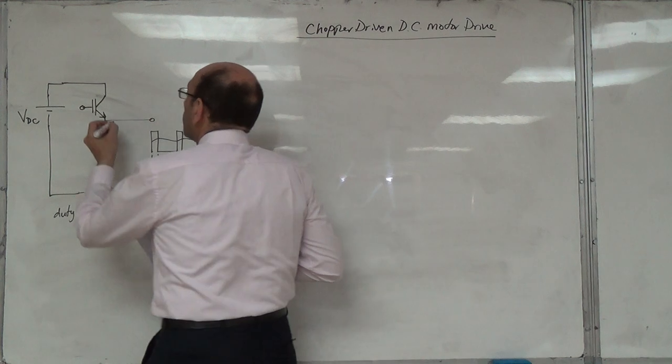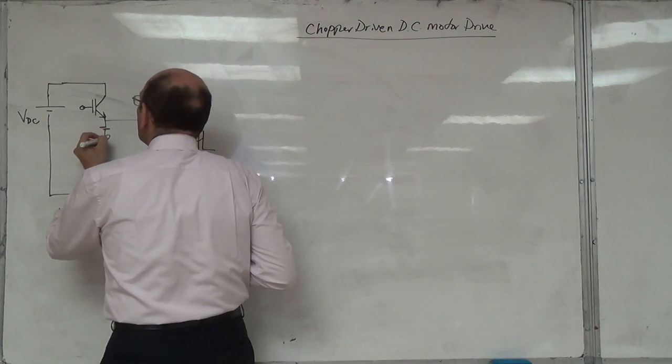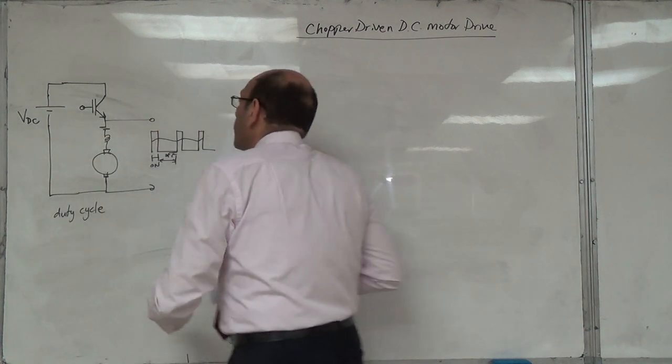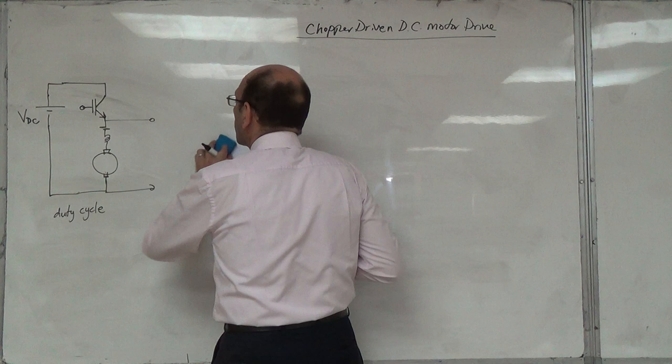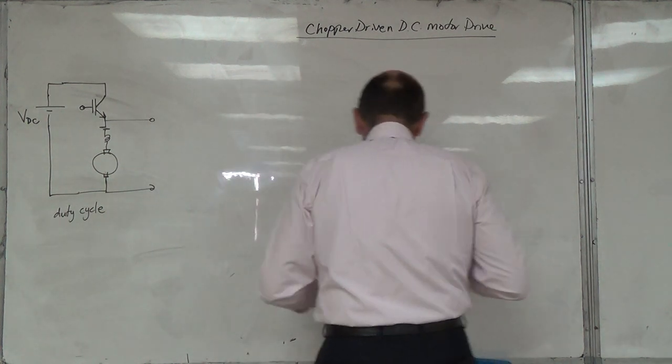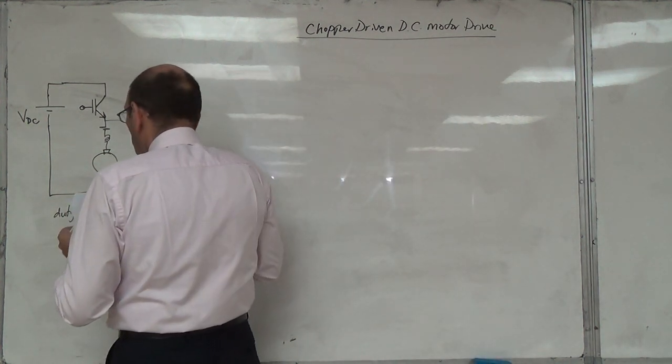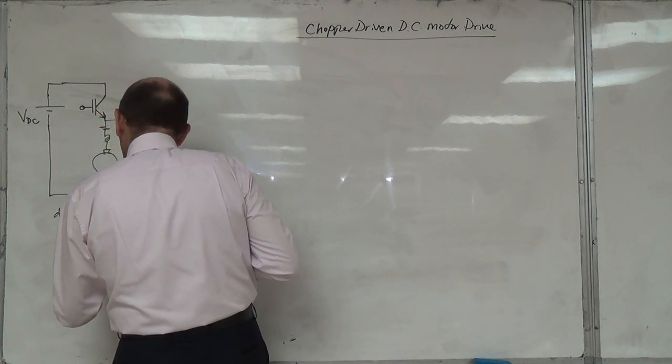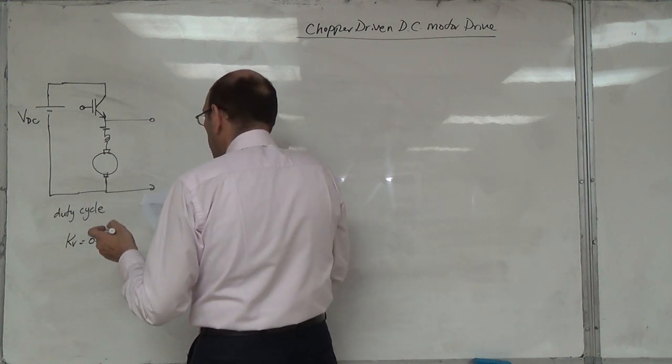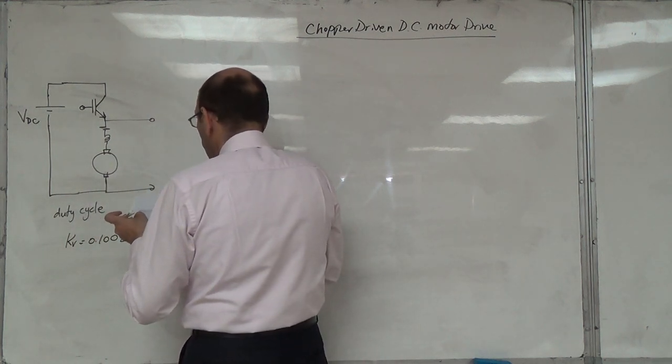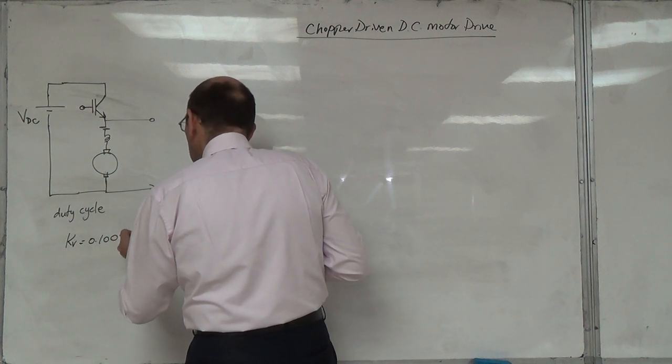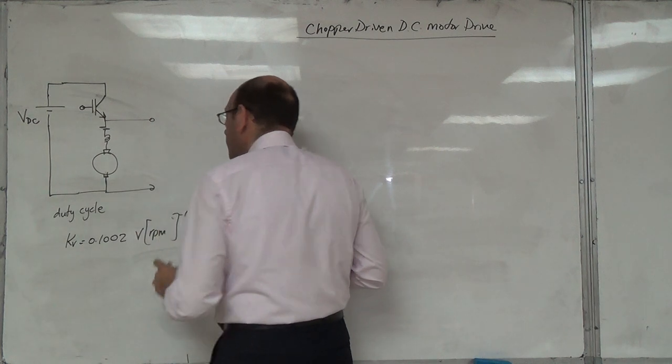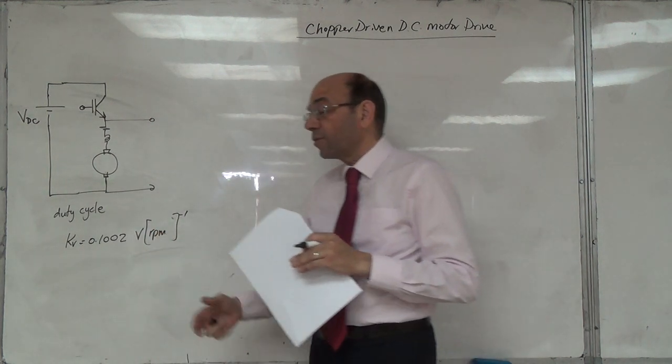The power of the DC motor, and here this is the KV. Here 0.1002 volts per RPM. This is different from the previous one.